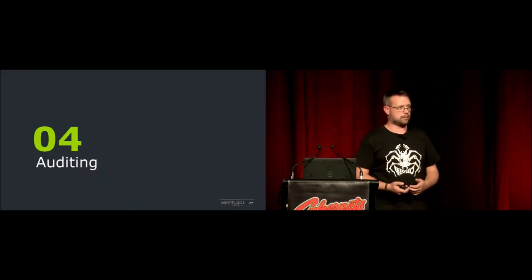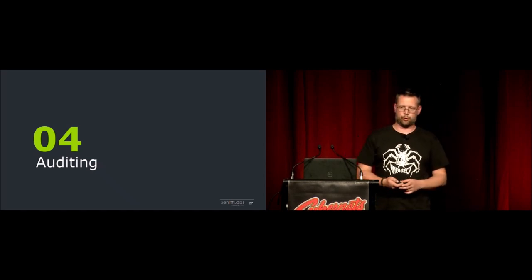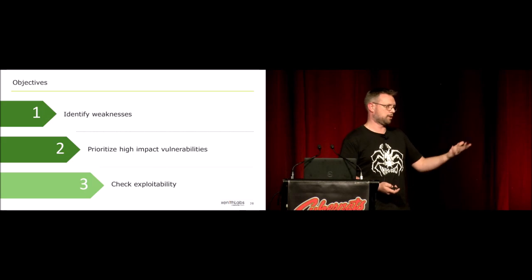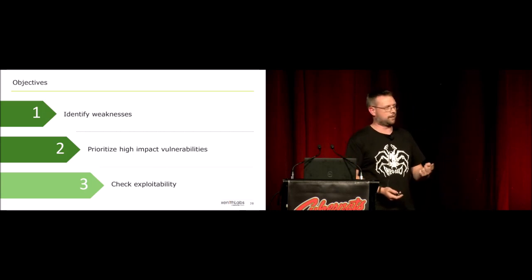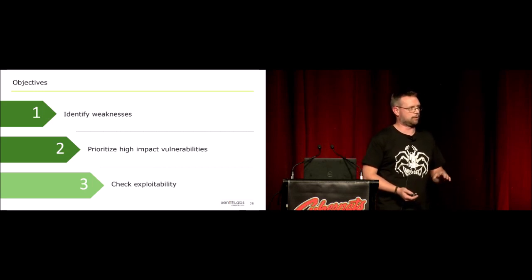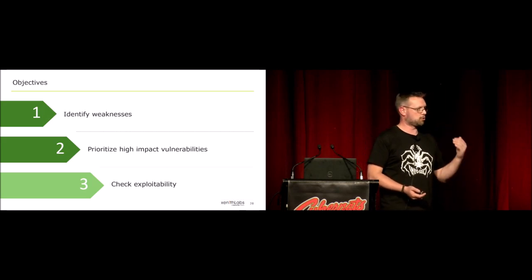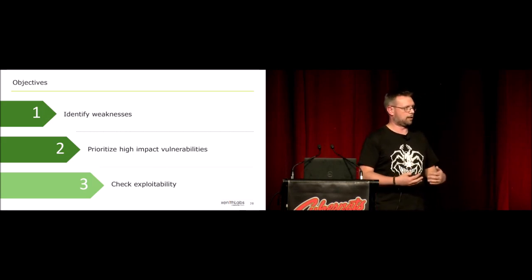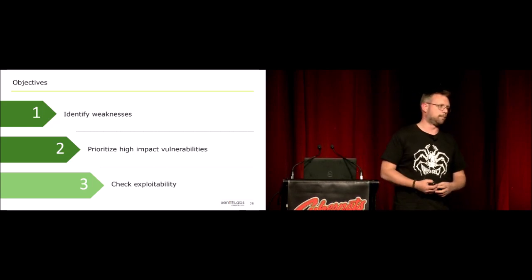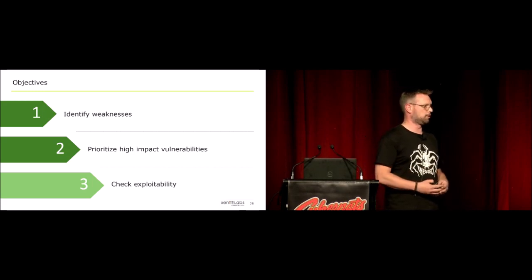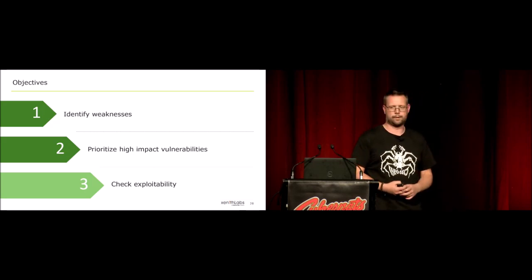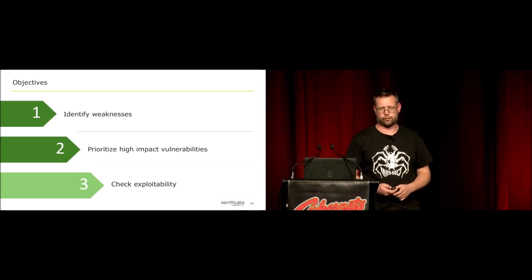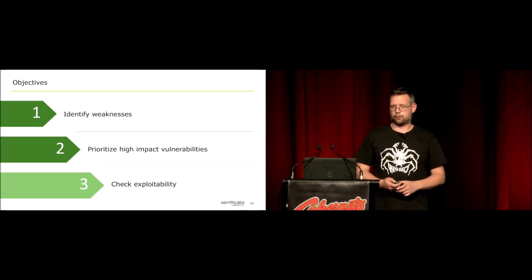Now that we know about vulnerabilities and reading source code, how do we actually go about auditing? It's basically a three-step process: identify the weakness — through source code, documentation, whatever — then prioritize high-impact vulnerabilities first, always looking for remote code execution and authentication bypass, ideally together. Once you're there, you've got to check exploitability, because a lot of times you might jump to a conclusion and think a particular function doesn't encode something correctly, but it turns out you're premature. Always verify you can actually exploit it before you shout about your latest vulnerability.